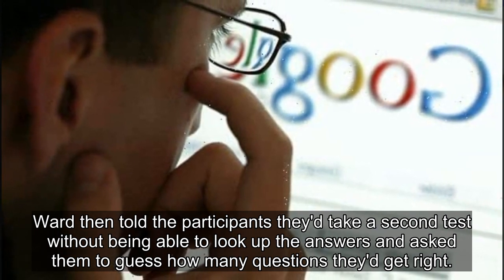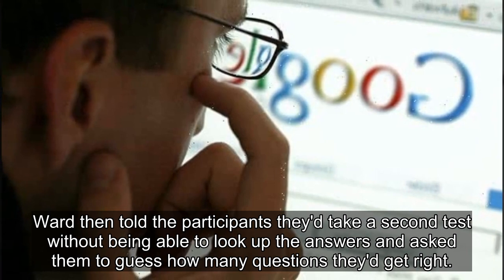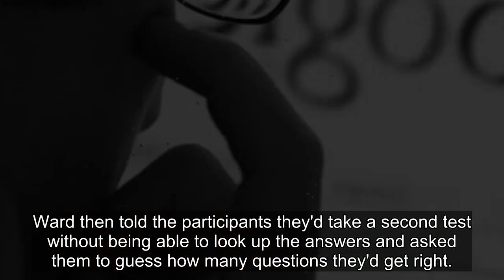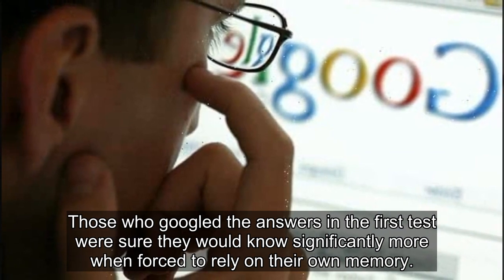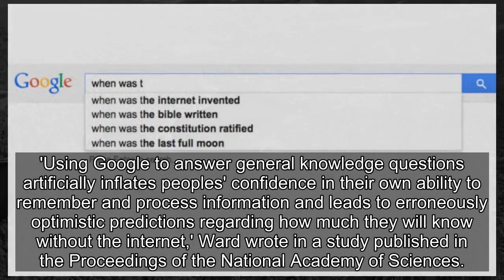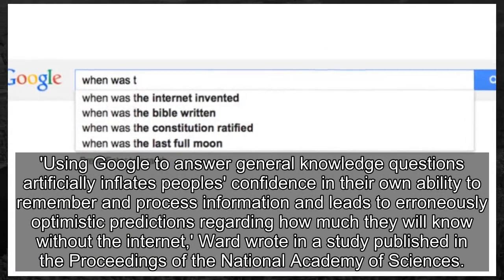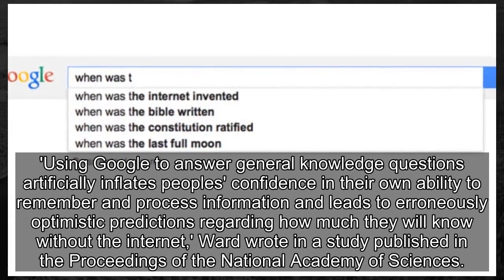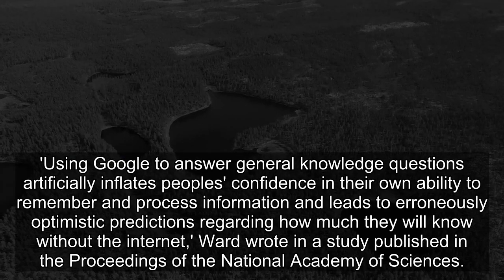Ward then told the participants they'd take a second test without being able to look up the answers and asked them to guess how many questions they'd get right. Those who Googled the answers in the first test were sure they would know significantly more when forced to rely on their own memory. Using Google to answer general knowledge questions artificially inflates people's confidence in their own ability to remember and process information and leads to erroneously optimistic predictions.